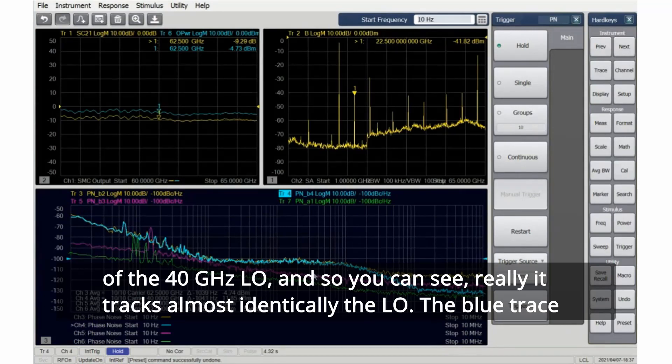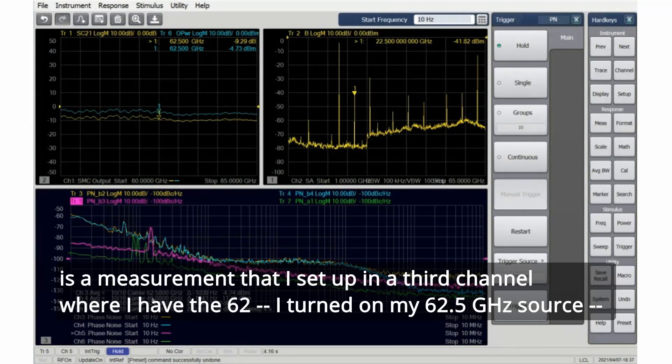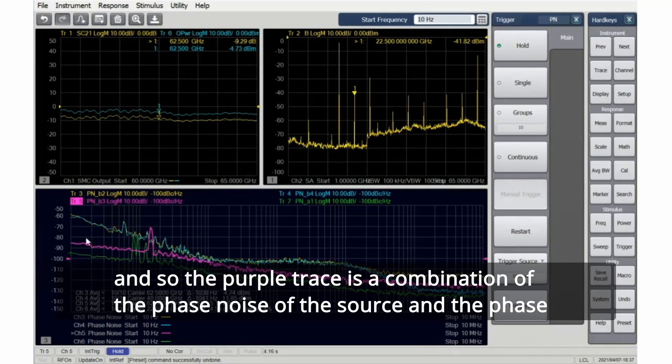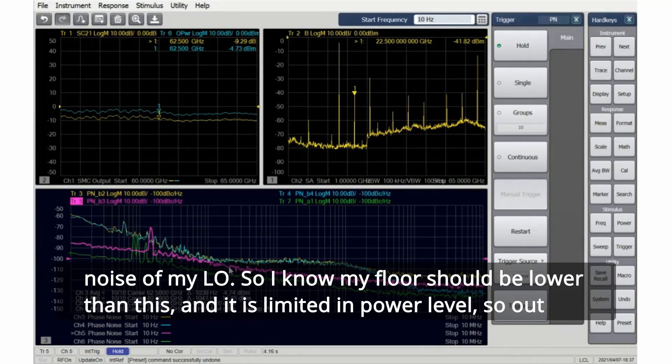The blue trace is a measurement that I set up in a third channel where I turned on my 62.5 gigahertz source. The purple trace is a combination of the phase noise of the source and the phase noise of my LO, so I know my floor should be lower than this and it is limited in power level.